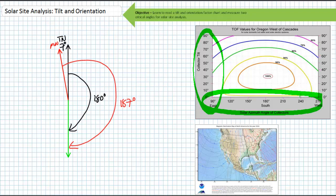Once you've got these two angles, tilt and orientation, it's just a matter of looking up the intersecting value on the TOF chart for your specific location.